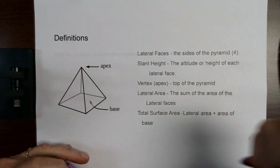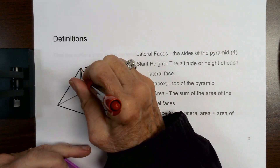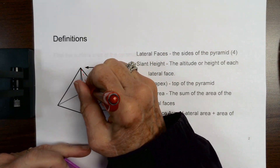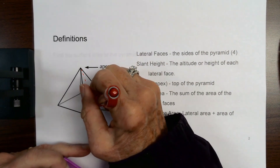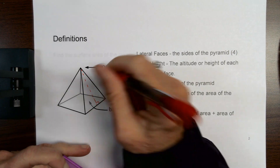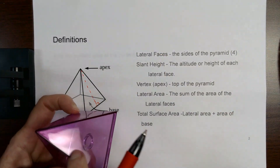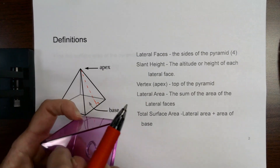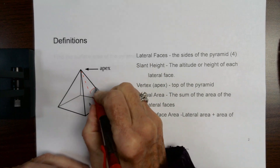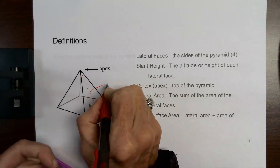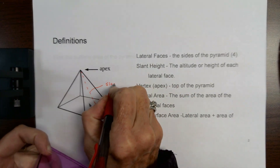On the diagram, if I put a dotted line coming down, you can see that dotted line lies on the lateral face and it's the height of the lateral face. This right here is what we call the slant height.